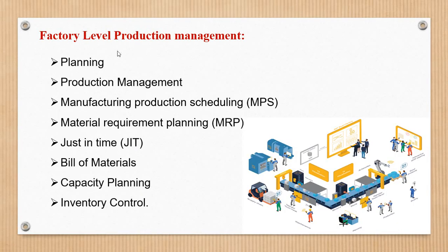Next is factory level management — factory level planning and production management. This includes manufacturing product scheduling, material requirement planning (MRP), just-in-time (JIT), bill of materials (BOM), capacity planning, and inventory control. These increase productivity.